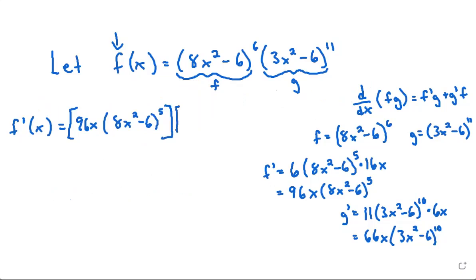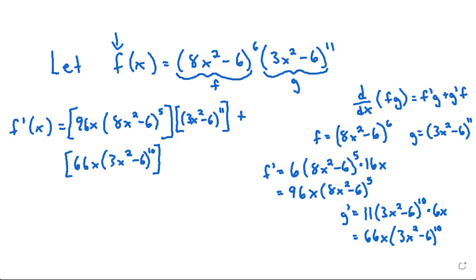Then plus g prime times f. My g prime is 66x times 3x squared minus 6 to the power of 10, and we multiply that by our f, which is 8x squared minus 6 to the power of 6.